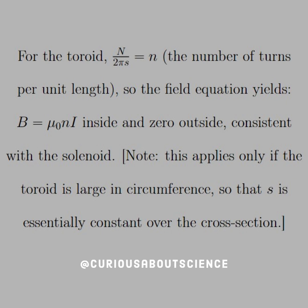if we have the donut large enough to where the cross section seems consistent, then N over 2πS is just n, where it's the number of turns per unit length, where 2πS is the circumference divided by N, the number in that circumference. So that makes sense geometrically.